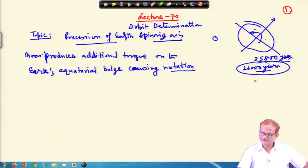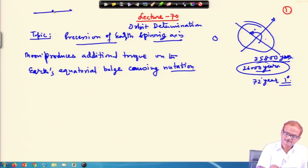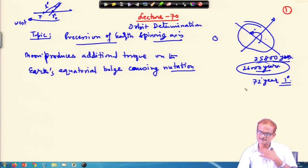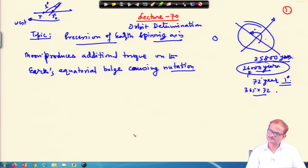Every 72 years, 1 degree regression of the nodal line takes place. That means on the ecliptic, if this is the gamma_0, then the next gamma after 72 years will change in the backward direction — moving westward by 1 degree in 72 years. If you multiply 365 by 72, it turns out to be around 26,000 years.